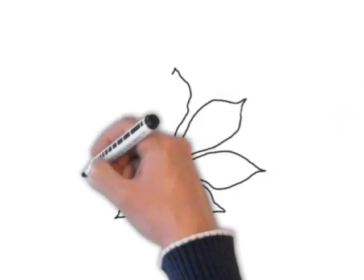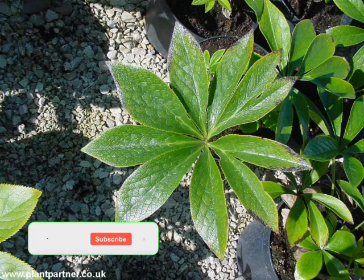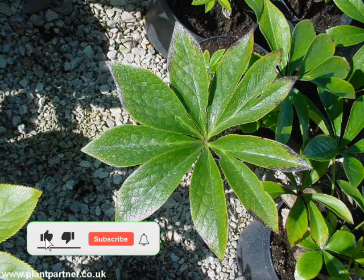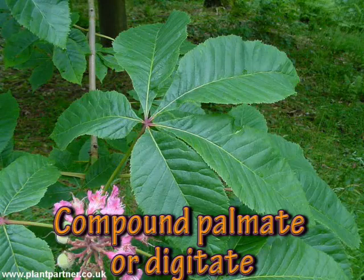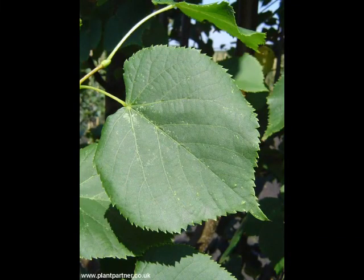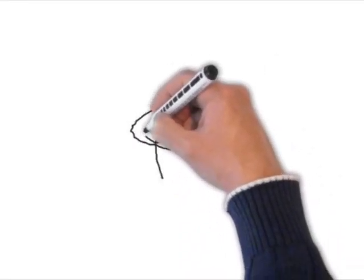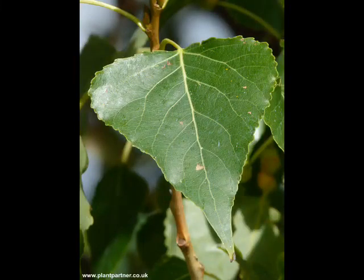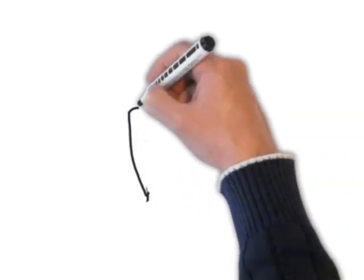Let's have a look and see how you get on with these. The first one — you can see the hellebore, which has got the digitate or compound palmate leaf. This one has a heart-shaped base like the lime, Tilia. On this one you can see it's got the deltoid leaf like a poplar. And this one has a wedge-shaped cuneate like these daphnes.